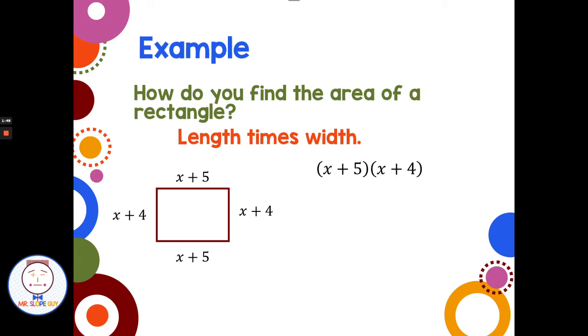So if I do first times first, x times x is x squared. Outside, x times 4 is 4x. Inside, 5 times x is 5x. And for last, we have 5 times 4 is 20. Then I do have some like terms in the middle here.